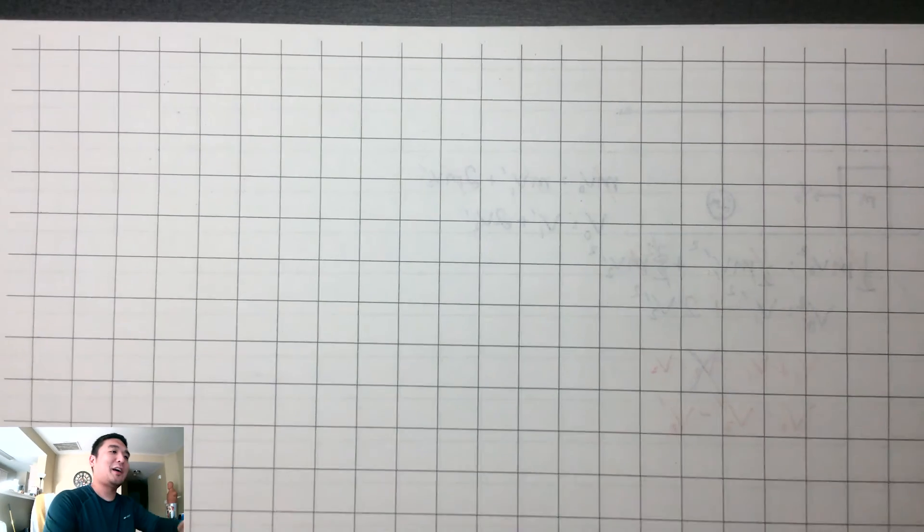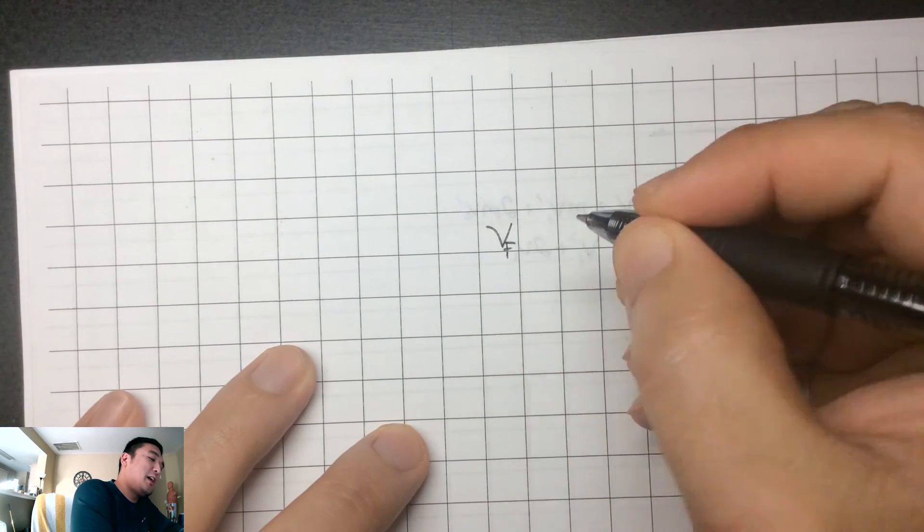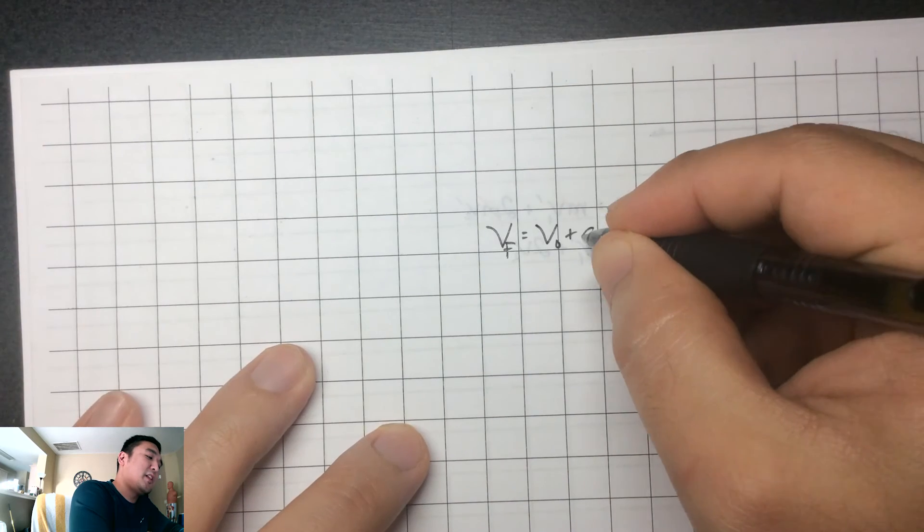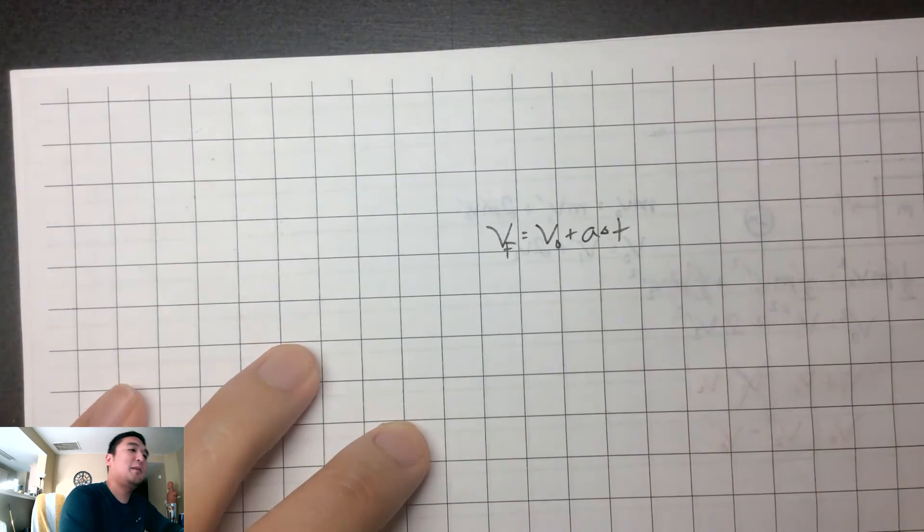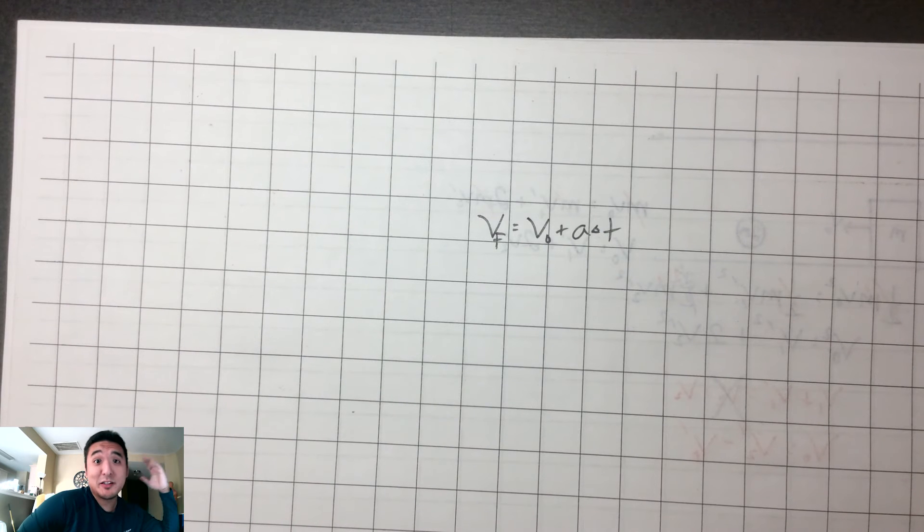Hey, it's Mr. K doing another video for AP Physics C Mechanics, still talking about some kinematics and derivations. Let's go ahead and do another derivation. We have so far that the final velocity is equal to the initial velocity plus the acceleration times the time of an object. And right now we're assuming constant acceleration.